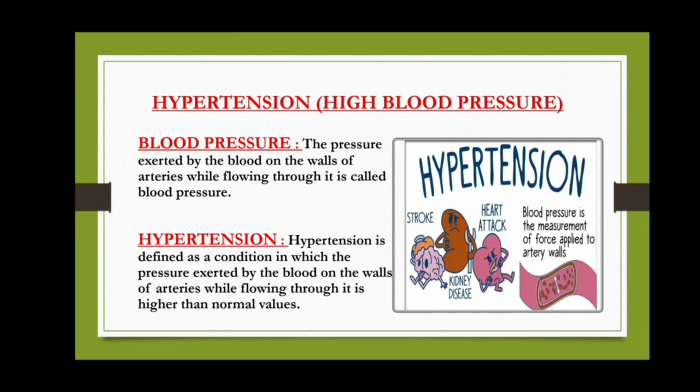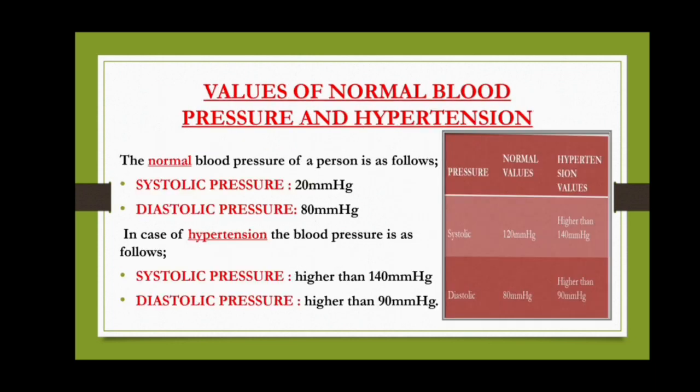Over a billion people around the world are under hypertension or high blood pressure — it is very common worldwide. The normal values of blood pressure are: systolic pressure, which is the arterial pressure when the heart contracts, is 120 mm Hg; and diastolic pressure, which is the arterial pressure when the heart relaxes, is 80 mm Hg.